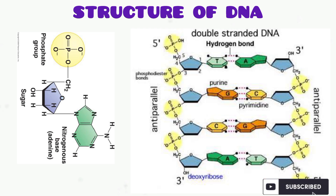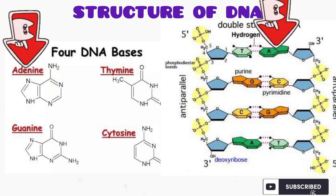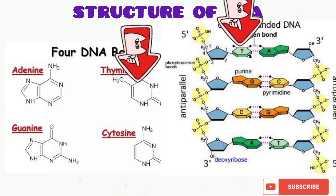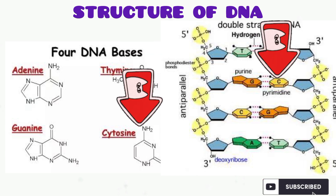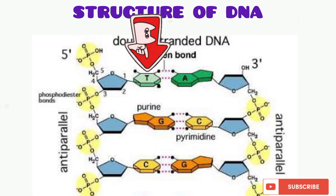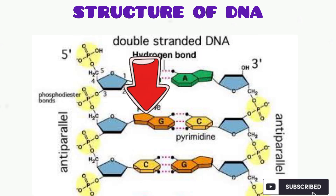In DNA, the nitrogenous bases are of four types. As you can see on your screen, they include adenine, guanine, thymine, and cytosine. Note that adenine always combines with thymine, while cytosine always combines with guanine.